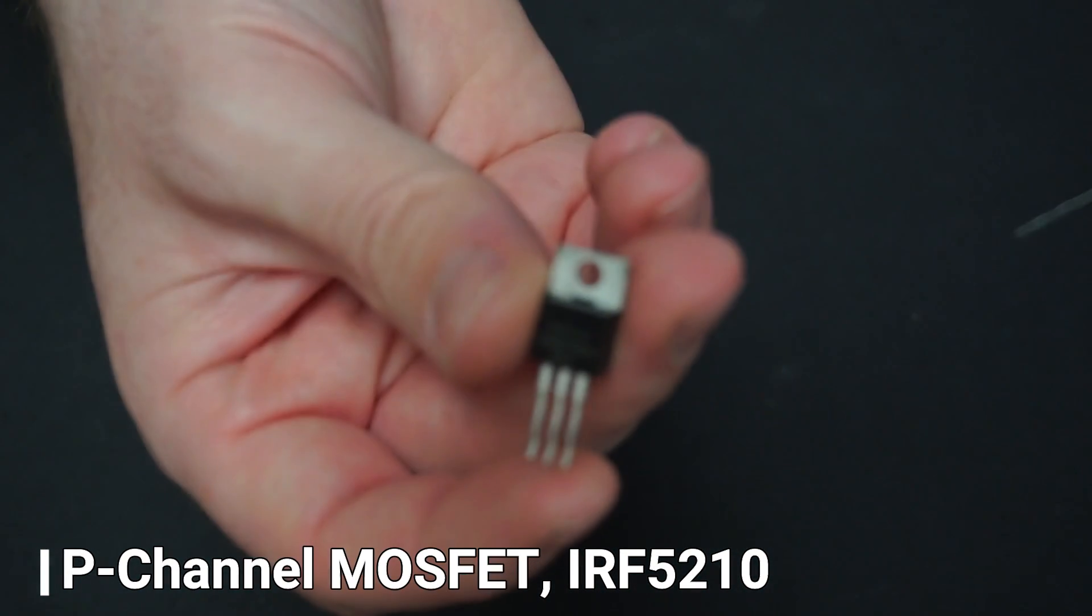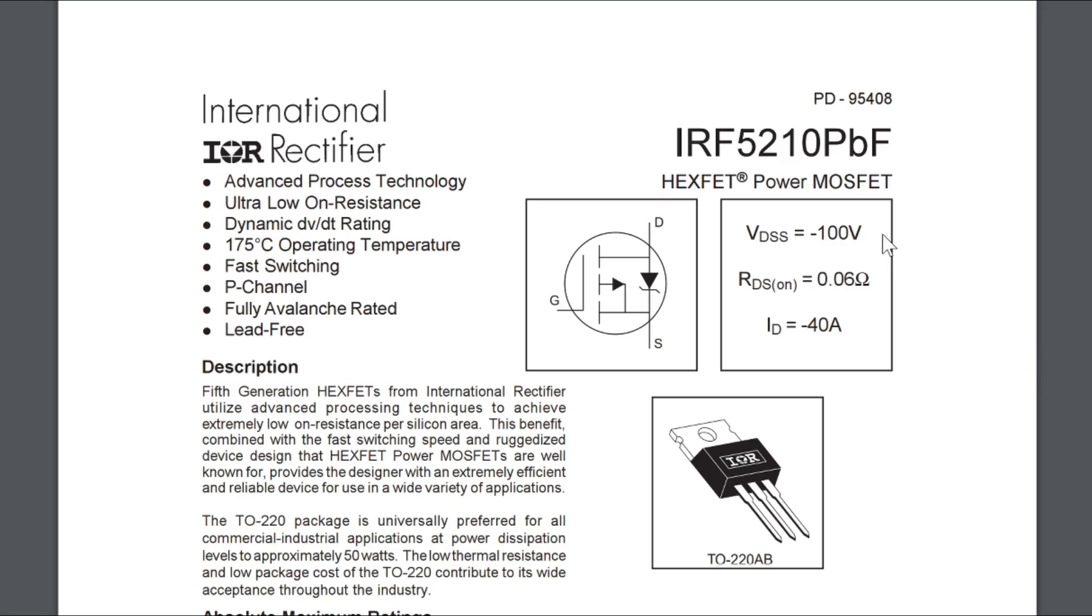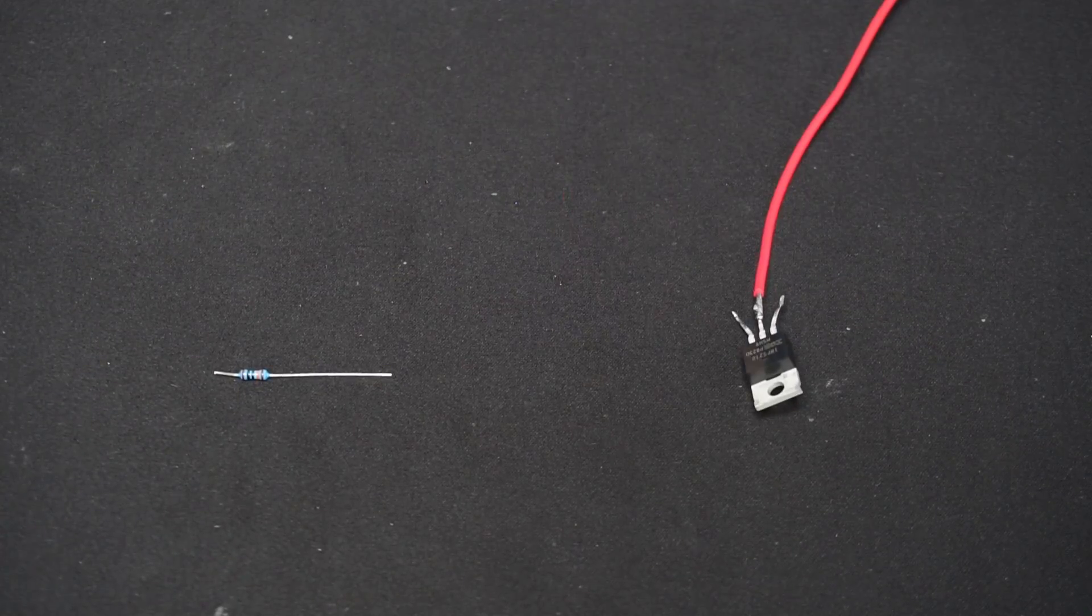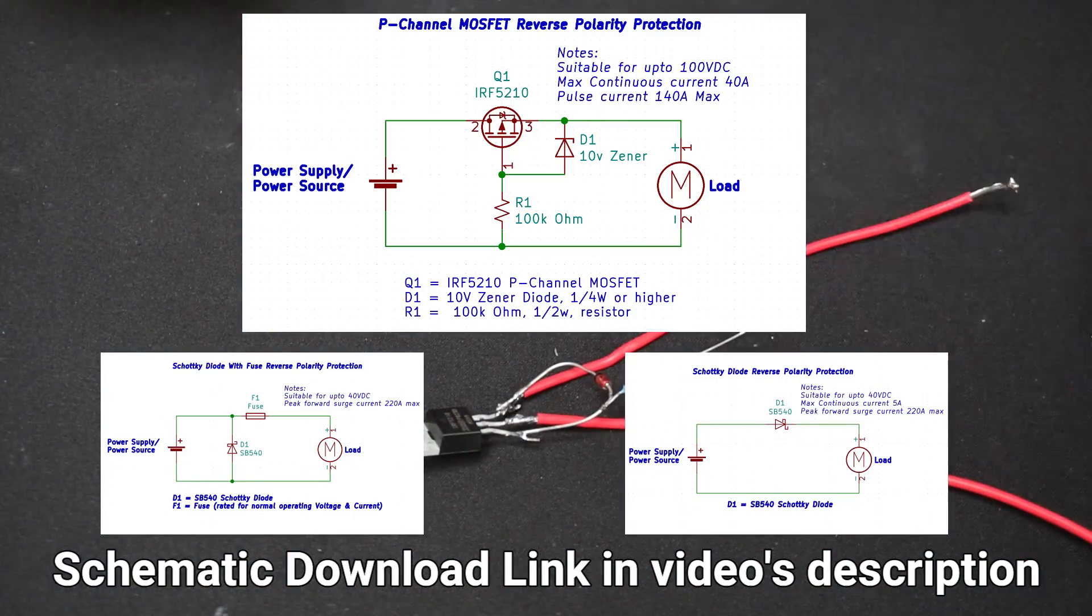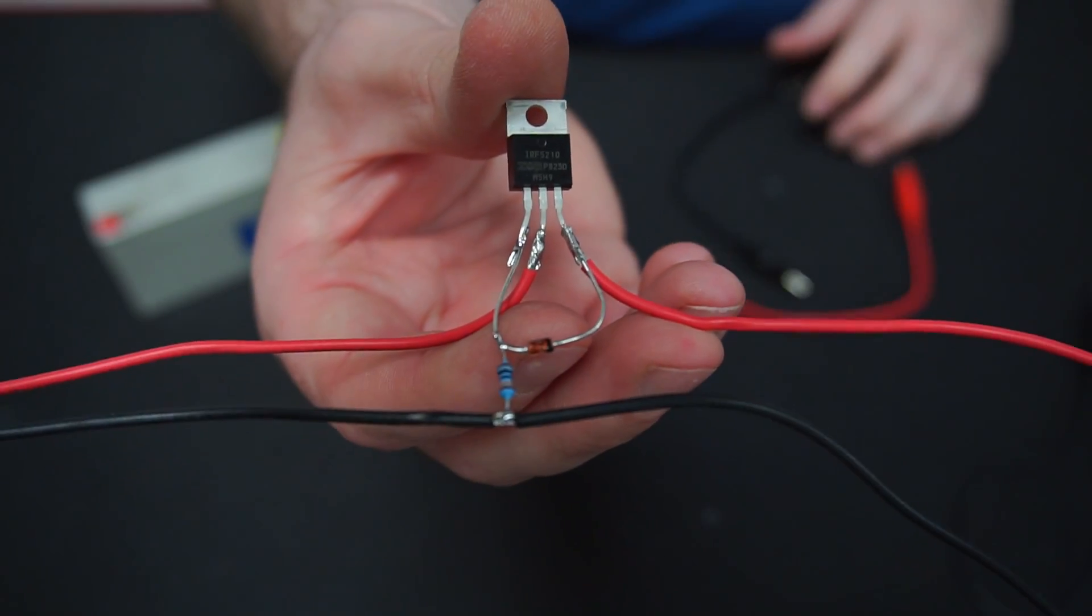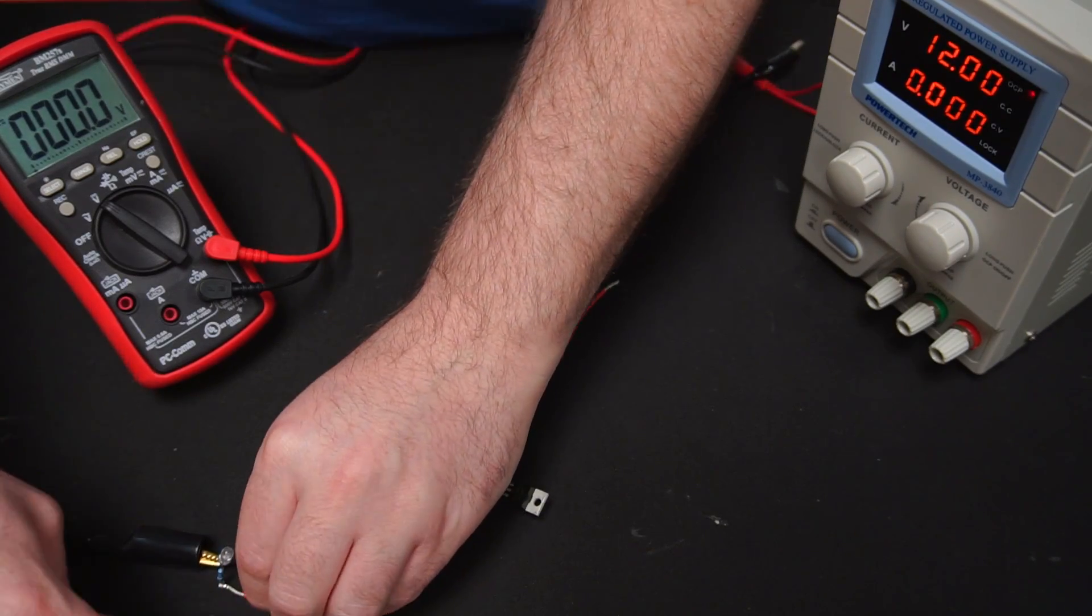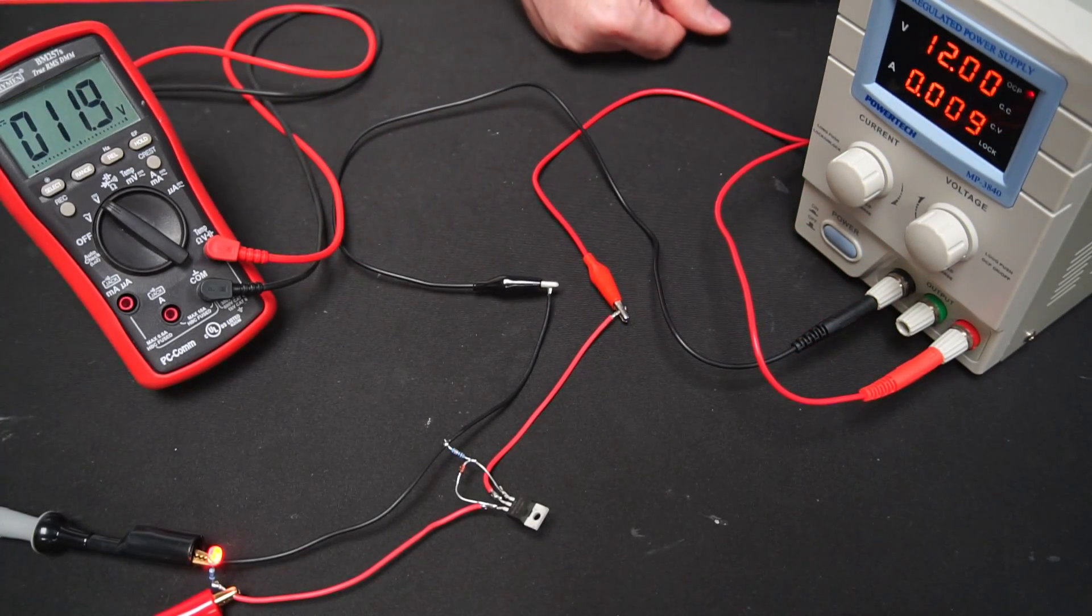Next let's look at using a p-channel MOSFET. I'm using an IRF5210. I chose this because it can handle up to 100 volts, has very low on resistance of 0.06 milliohms and can handle up to 40 amps of current. We also need a 10 volt Zener diode and a 100,000 ohm resistor. The components need to be connected as shown. I'll include schematics for download in the video's description if you're interested. Now I have the circuit assembled let's put it to the test. As well as the indicator LED I also have my multimeter measuring the voltage where the load or battery would normally be connected.